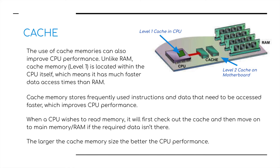The larger the cache memory size, the better the CPU performance. Level one cache is on the CPU; level two cache is somewhere else — generally speaking close to the CPU, on the motherboard or even on the RAM.